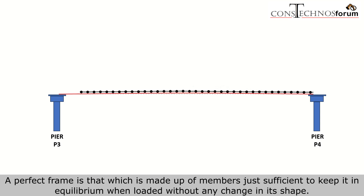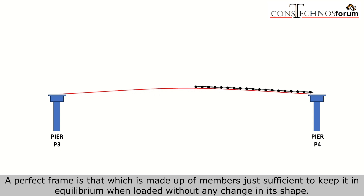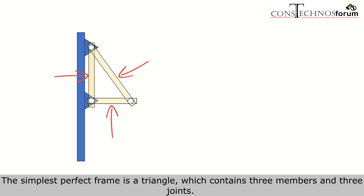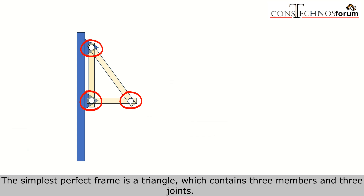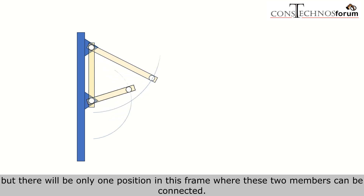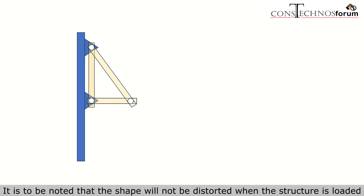A perfect frame is one made up of members just sufficient to keep it in equilibrium when loaded without any change in shape. The simplest perfect frame is a triangle, which contains three members and three joints. When we connect all three joints of this frame through pins and if any one joint gets opened, it becomes unbalanced, but there will be only one position where these two members can be connected. The shape will not be distorted when the structure is loaded.